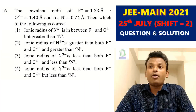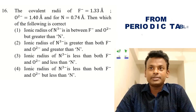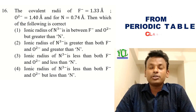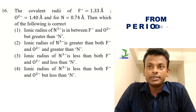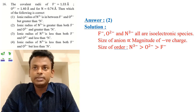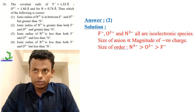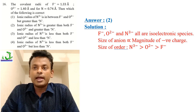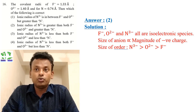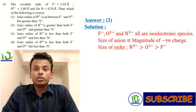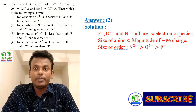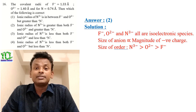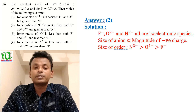Question 16: Covalent radii of F⁻ = 1.33 Å, O²⁻ = 1.40 Å, and nitrogen = 0.74 Å. The answer is option 2 — the ionic radius of N³⁻ is greater than both F⁻ and O²⁻, and greater than the nitrogen atom. F⁻, O²⁻, and N³⁻ are all isoelectronic. Since the size of an anion is directly proportional to the magnitude of negative charge, N³⁻ has the largest radius.